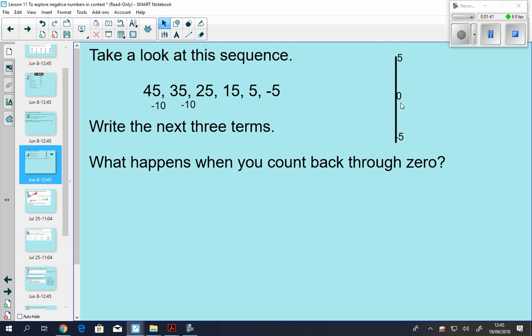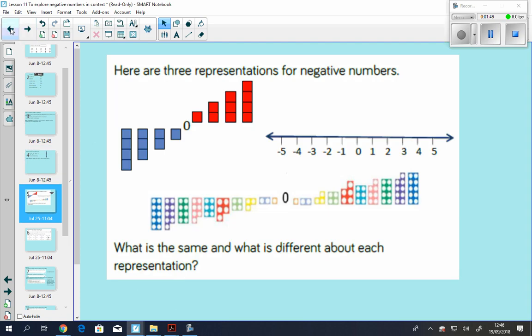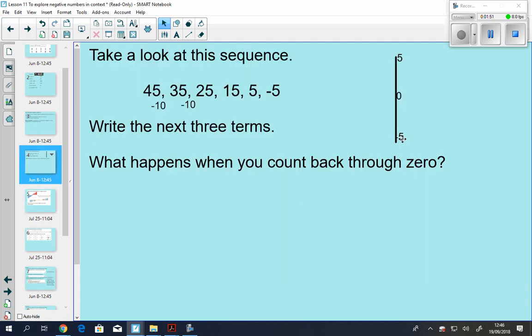The closer you are to 0, the greater the number is. The way I think of it is the number is warmer, if that helps. When we count back through 0, the numbers become negative—they have the negative symbol in front of them. We don't say minus 5 because we're not taking 5 away. It's negative 5.